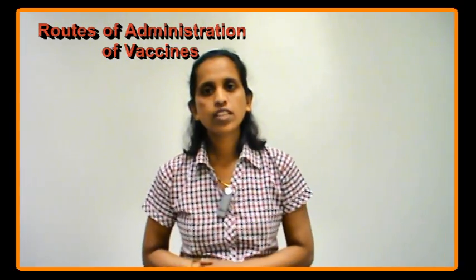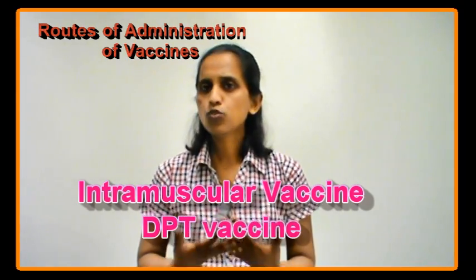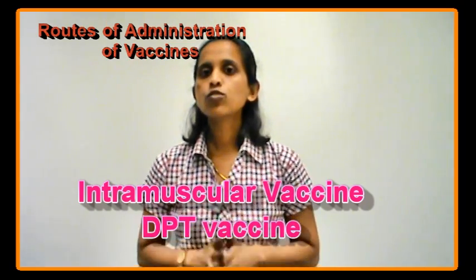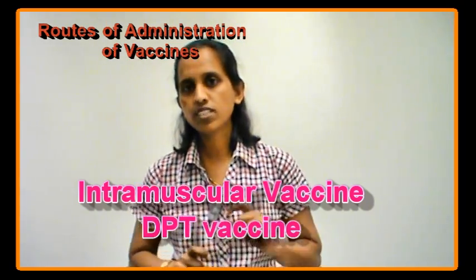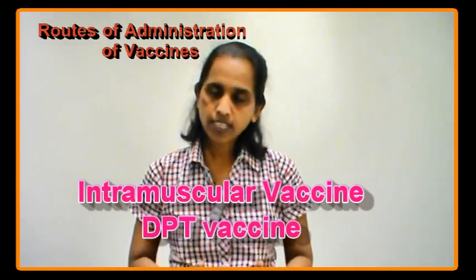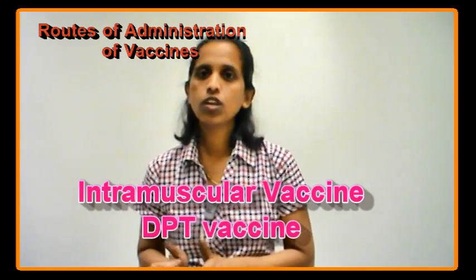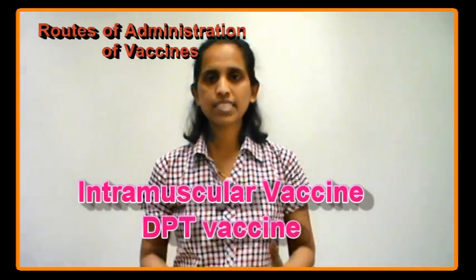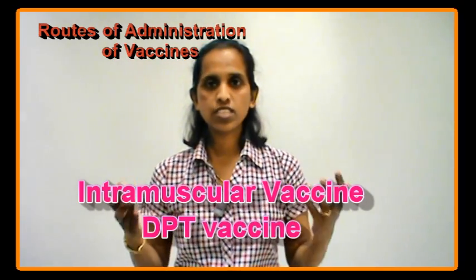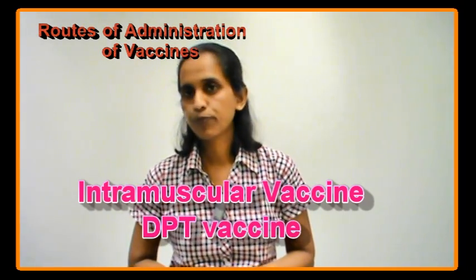Next is the intramuscular route of administration. This is the most common route, and most vaccines are administered this way. Vaccines which contain adjuvants — substances which help in retaining the binding and effectiveness of the vaccine — are mostly administered by the intramuscular route. Examples include diphtheria, pertussis, and tetanus combined vaccine, hepatitis B vaccine, Haemophilus influenzae type B vaccine, and others.